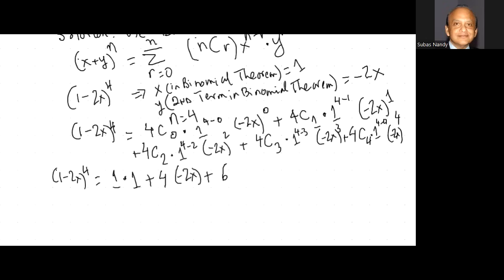1 raised to the power of 4 minus 2, so 1 exponent 2 is 1. And minus 2x squared means minus 2 times minus 2 and x squared. Plus 4C3: type 4, math, PROB, scroll down to 3, hit enter, taking 3 items out of 4, so 4C3 is 4. 1 raised to the power of 4 minus 3 is 1 raised to the 1, which is 1. And minus 2 times minus 2 times minus 2, so minus 8, times x cubed.